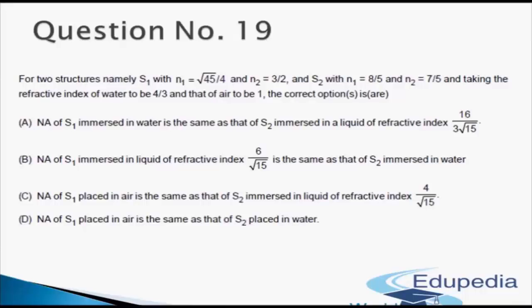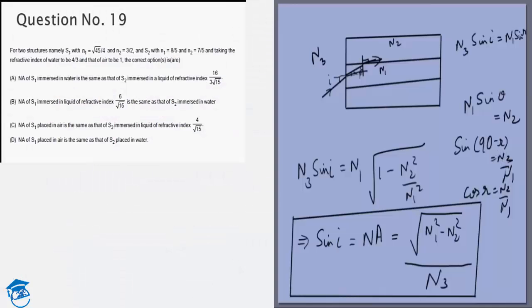Now we are given n1 and n2 and n3, and we are given four options. All you need to do is put the values of each. In the first option, S1 is immersed in water, so n1 is root 45 by 4, n2 is 3 by 2, and n3 is the refractive index of water which is 4 by 3.